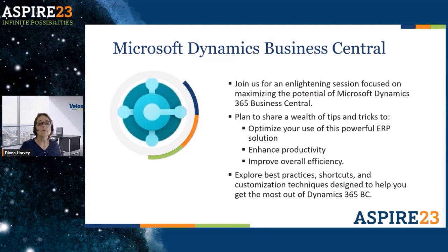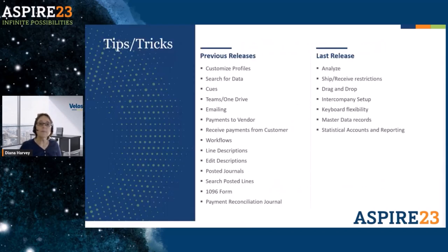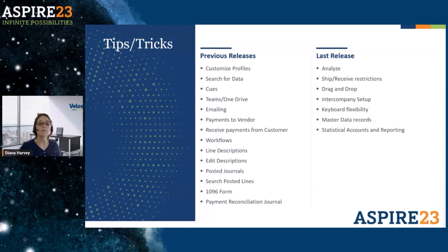Some of these are best practices, some are just shortcuts — the ability to use the system more for what you need to do. The areas I'm going to cover include customizing the profiles, searching for data, what cues can do for you, Teams and OneDrive in Microsoft, emailing out of the system, quickly doing payments to a vendor, receiving payments from a customer, and more and more clients are doing receivables as an ACH file. Also workflows, how you can adjust line descriptions, edit your descriptions, bring back up posted journals, search for posted lines, the 1096 form, and options for your payment reconciliation journal.